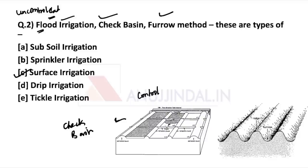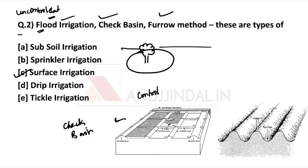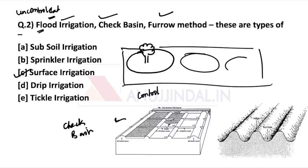There is also the basin method, where one basin is made for a particular crop — for example, if this is a tree, one basin is created around it. Different basins are created which are flooded with water for particular crops. This is the basin method. When we combine these methods, we get check basins, where one by one water is given to each basin.